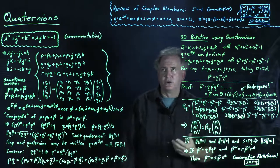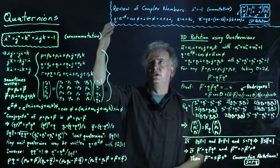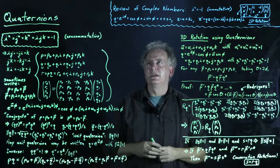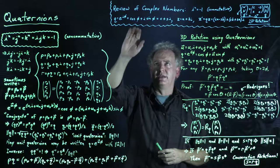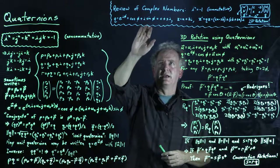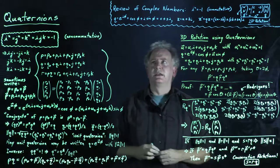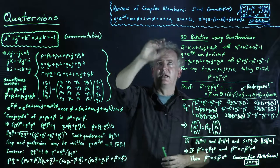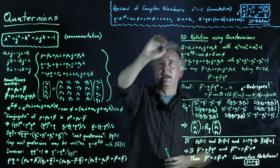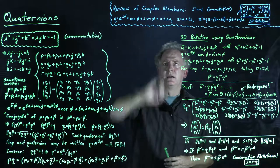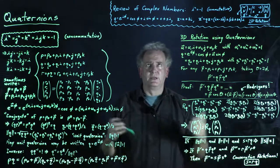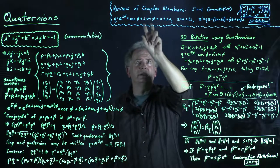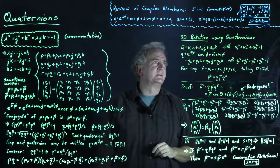Euler showed that when q = e^(iφ), if you write out the series, the real part becomes cos φ and the imaginary part becomes i sin φ. So when q = e^(iφ), we take c as cos φ and s as sin φ. This notation — c for cos φ and s for sin φ — will be used frequently throughout this discussion to simplify the notation.